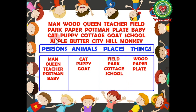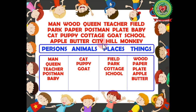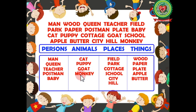Next we have 'apple' — A-P-P-L-E. Apple is the name of a thing, so it is a noun. Next we have 'city' — C-I-T-Y. City is the name of a place, so it is a noun. Next we have 'hill'. Hill is the name of a place, so it is a noun. Next we have 'monkey' — M-O-N-K-E-Y. Monkey is the name of an animal, so it is a noun.